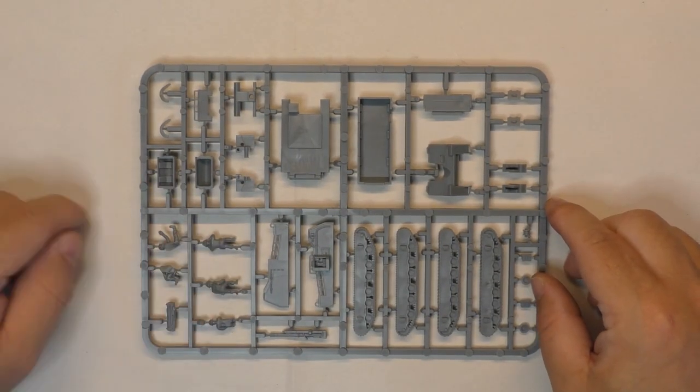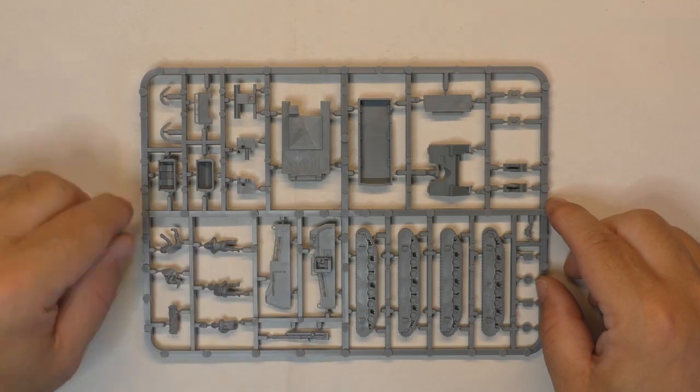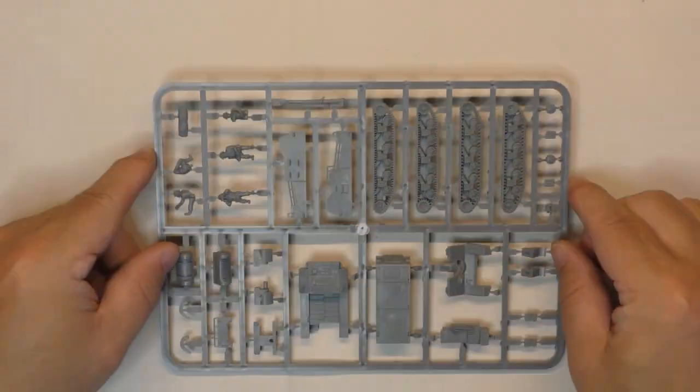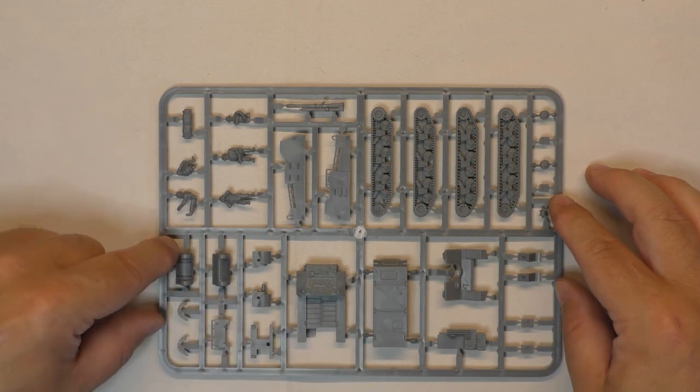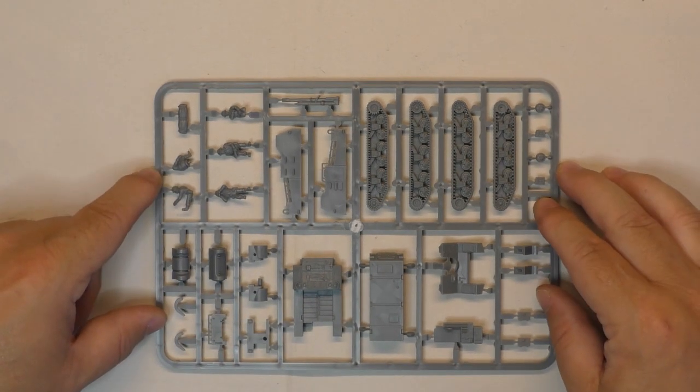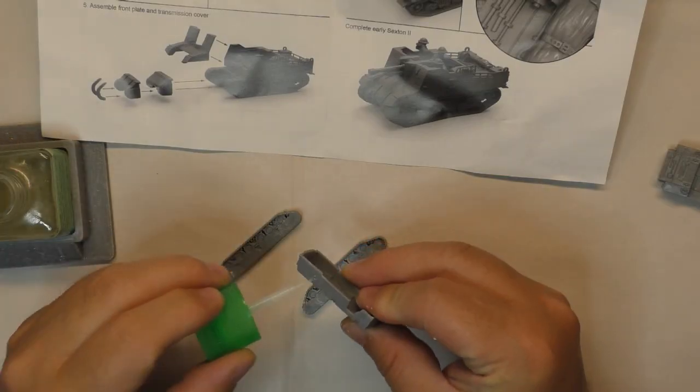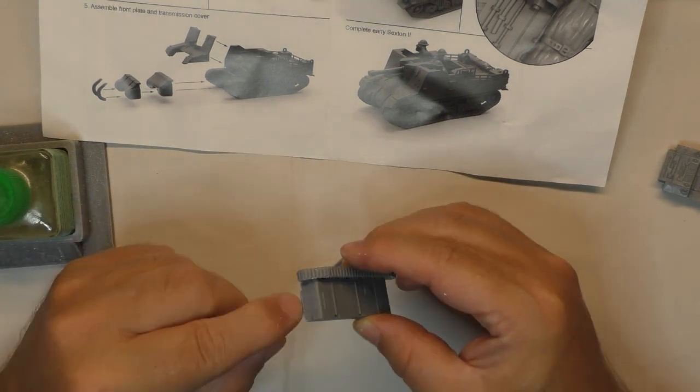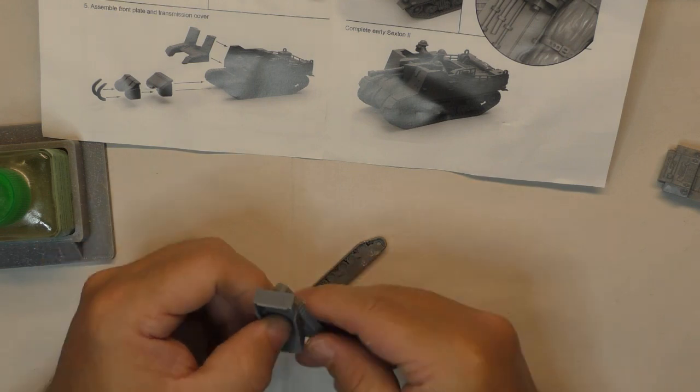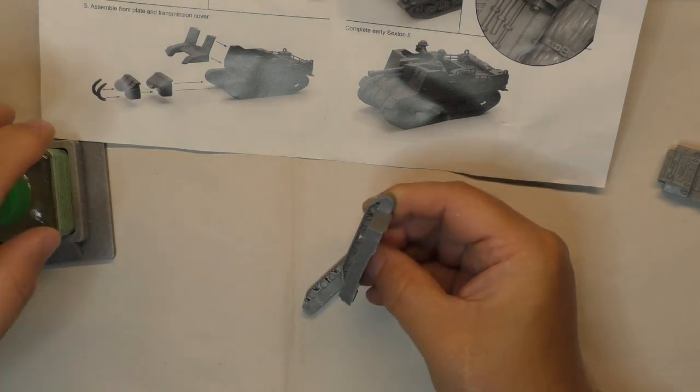Here's the sprues, there's five, they're all identical so there's no problem there. You can see there's really well defined the position of everything. There's a soldier, there's the front, the tracks, two options are together. So we'll build one.